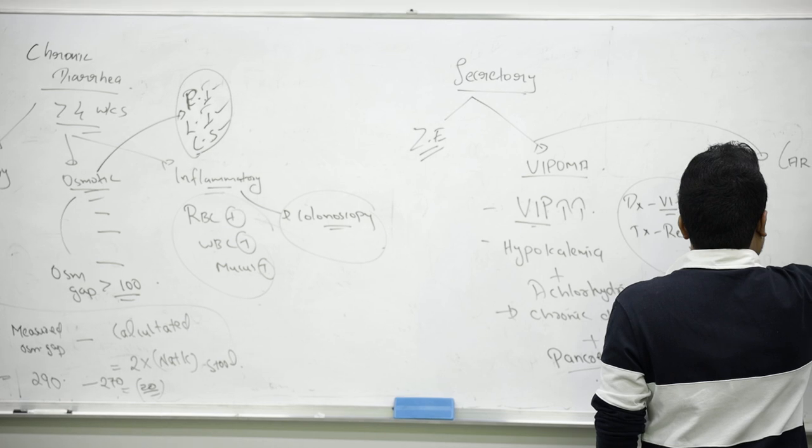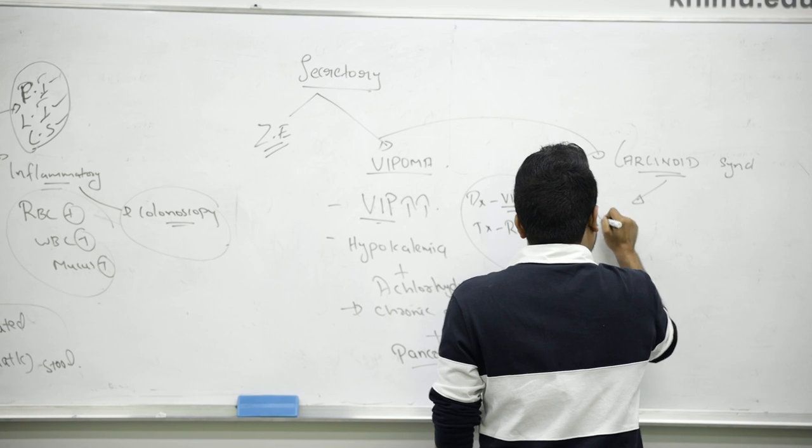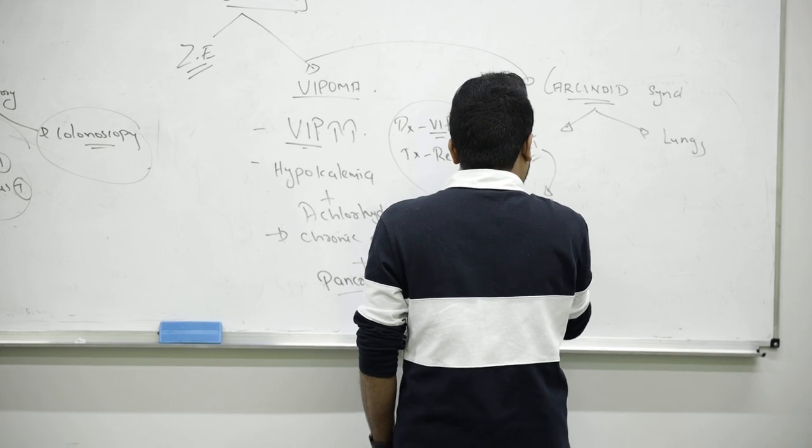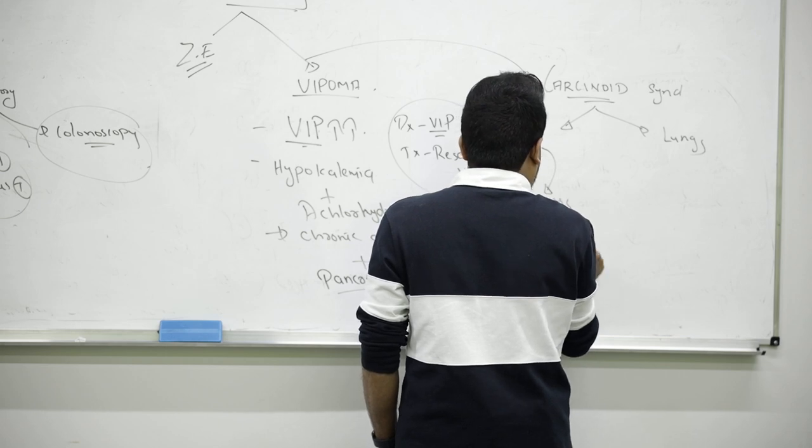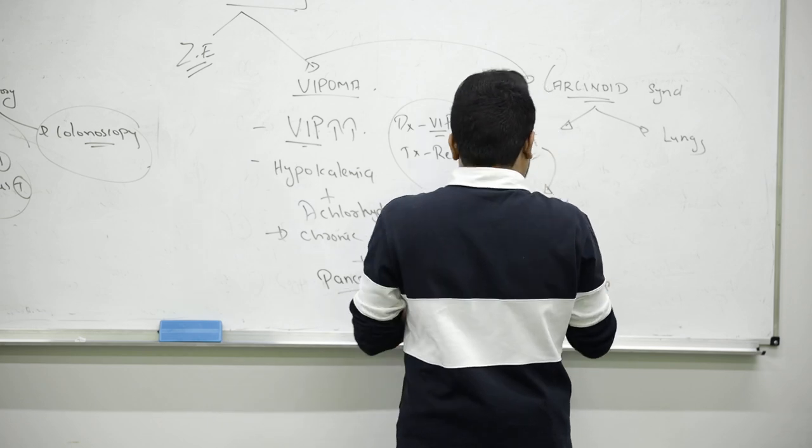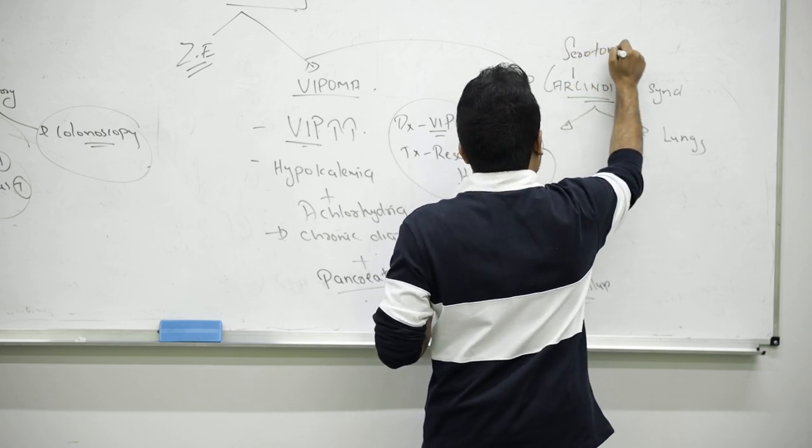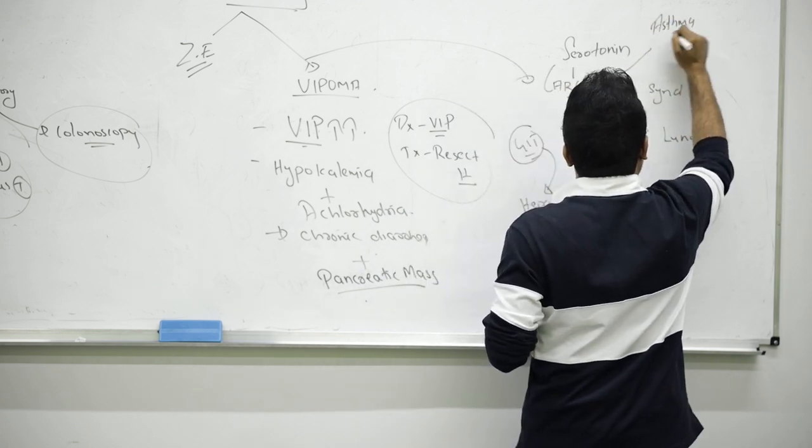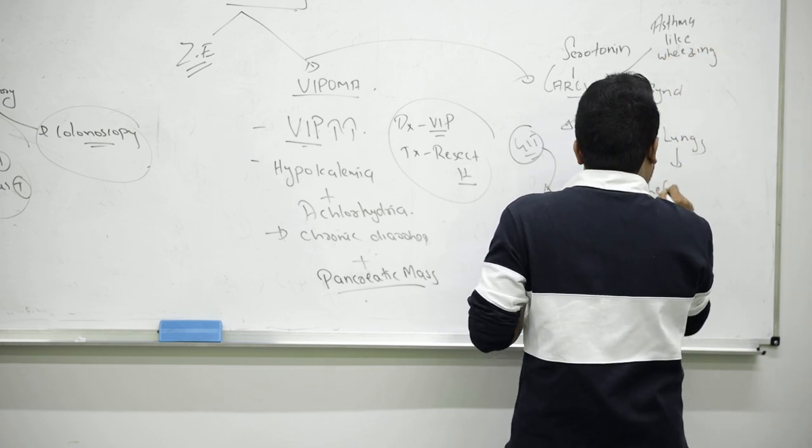Next is carcinoid syndrome. It can come from the GIT or from the lungs. From GIT, it will go to the hepatic vein and can cause right-sided heart failure. The hormone produced here in carcinoid is serotonin. This serotonin will cause asthma-like wheezing and bronchoconstriction. But if the tumor is in the lungs, that will cause left-sided heart failure.